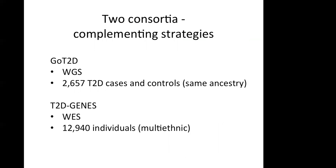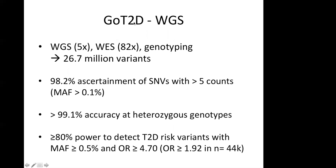The first consortium was the GO T2D consortium, which did whole genome sequencing in approximately 2,600 type 2 diabetes cases and 2,200 controls with European ancestry. The T2D Genes Consortium did whole exome sequencing in 12,900 individuals with multi-ethnic background — I think five different population backgrounds.